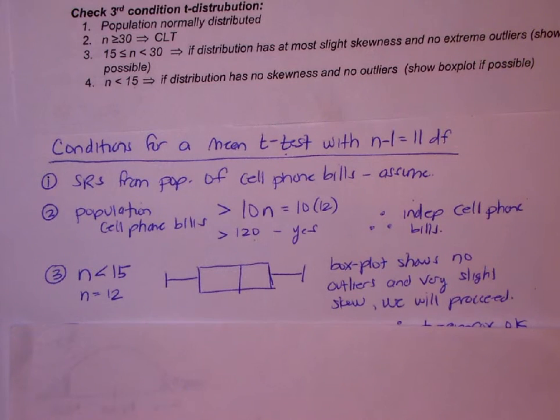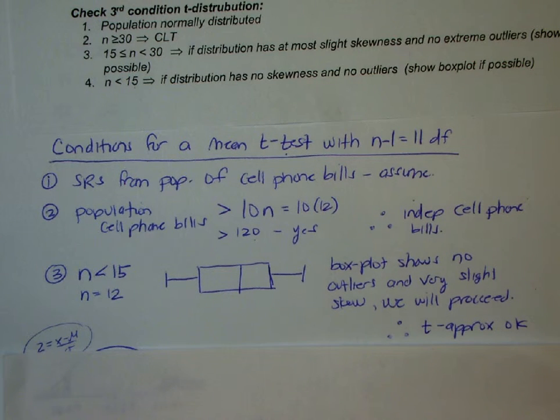You're going to copy that box plot down like you have before and just comment on it. So I wrote, box plot shows no outliers and very slight skew, so we will proceed. And when I write my therefore statement, I'm going to write, I'm okay with a T approximation is okay to proceed. So now that brings me to the next part.